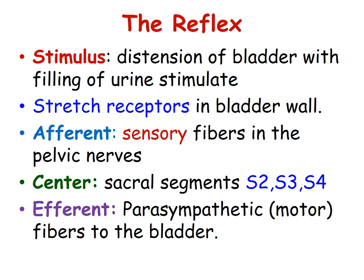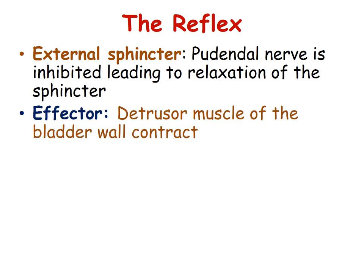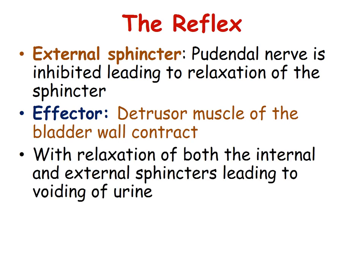The reflex also has to take care of the external sphincter, which is supplied by the pudendal nerve, and inhibition of this leads to relaxation of the sphincter. The effector is the detrusor muscle of the bladder. Relaxation of both the internal and external sphincters leads to the voiding of urine.